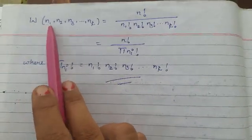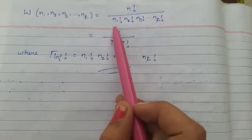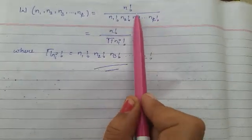This formula is W(N1, N2, N3, up to NK) equals N factorial divided by N1 factorial times N2 factorial times N3 factorial, and so on, up to NK factorial.